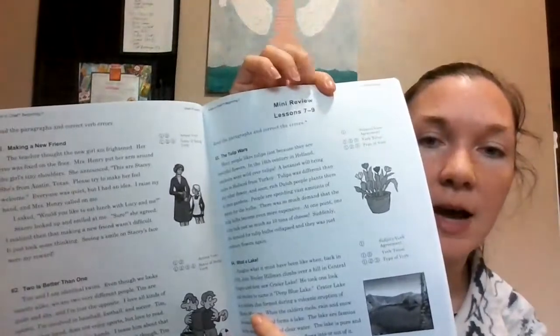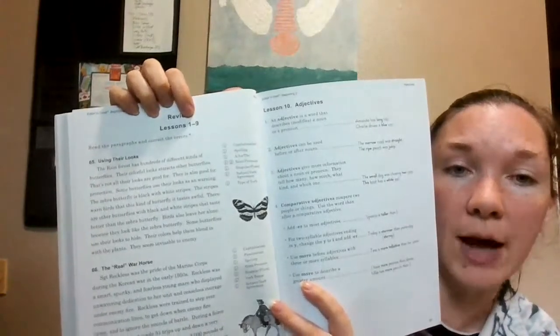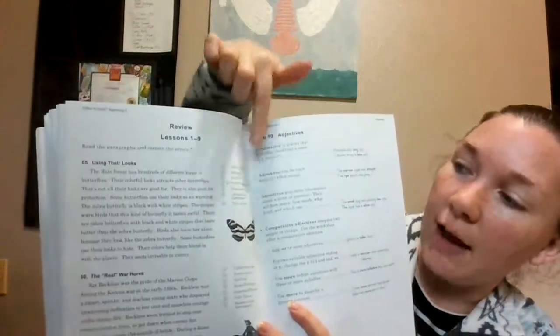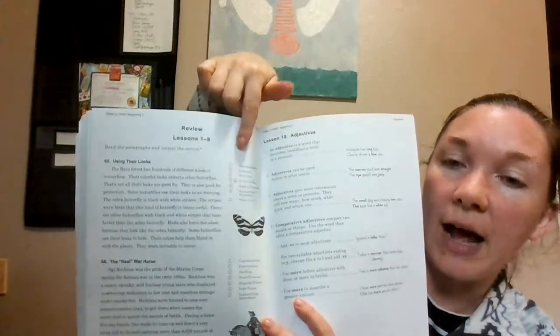Then after lesson nine, there would be another mini review. So the mini reviews are every three lessons. Then there's a review here over lessons one through nine. So then again, you're going to have probably one error of each. But you're going to have all the different types. So they have to start looking for more than one type. And it just slowly builds on to that. It's the same pattern, the same routine. It'll introduce one thing. You'll practice that one. You'll move on to another lesson.